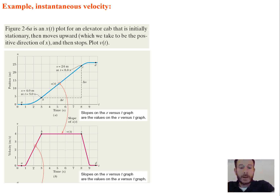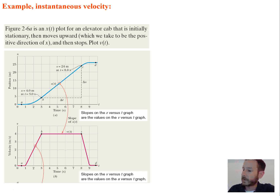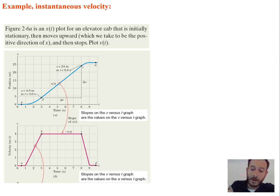The figure shows the x(t) plot for an elevator cab that is initially stationary, then moves upward — which we take to be the positive direction of x — and then stops. So you have an elevator accelerating up to a speed as it's climbing, then it slows down and stops. We need to plot velocity versus time, so we want to figure out the slope of the x(t) graph.